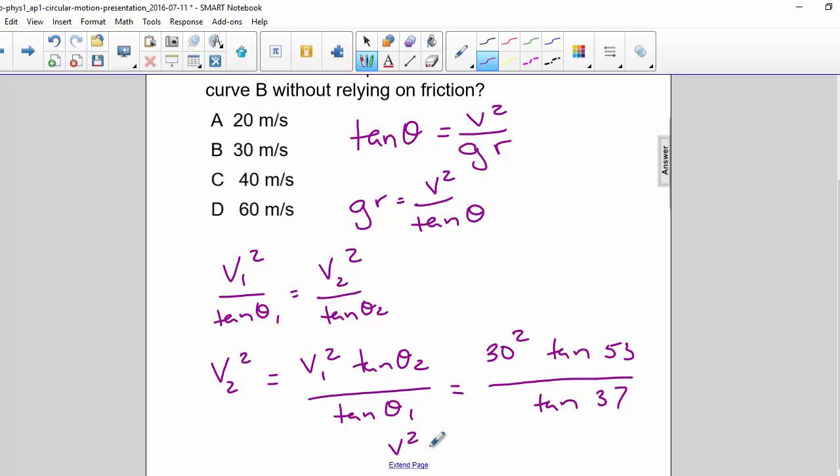So V squared equals 1600, and so V equals 40 meters per second. So the correct answer is C, 40 meters per second.